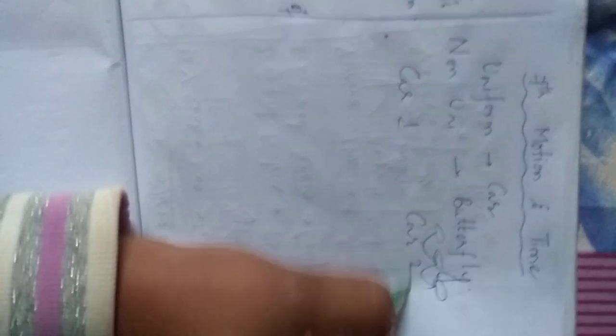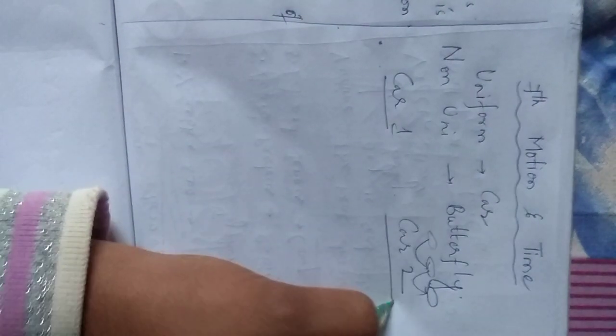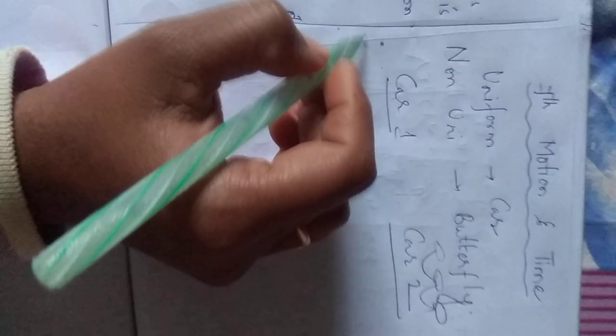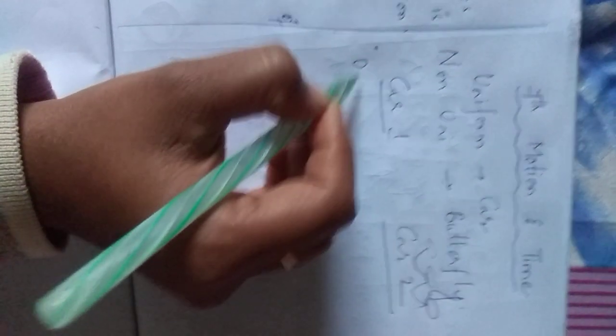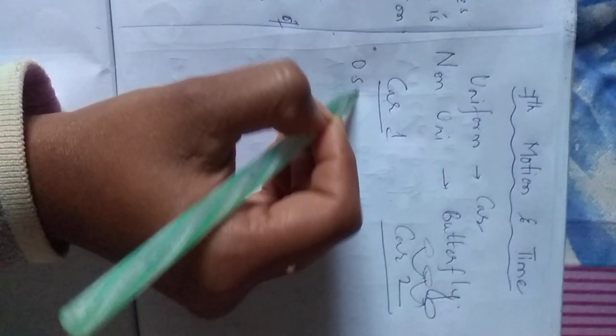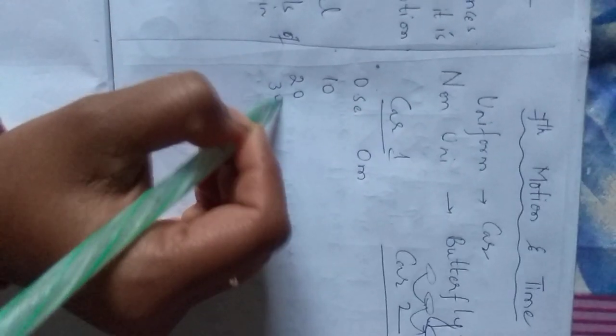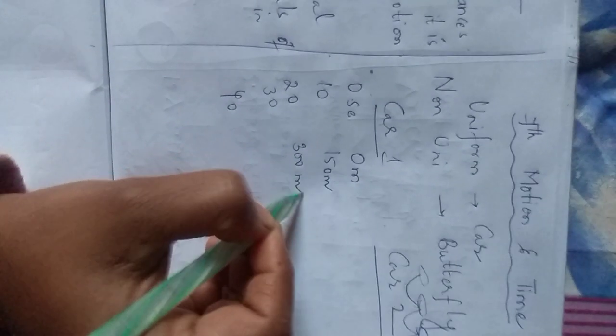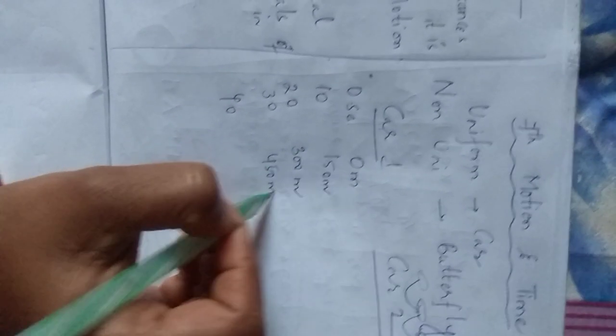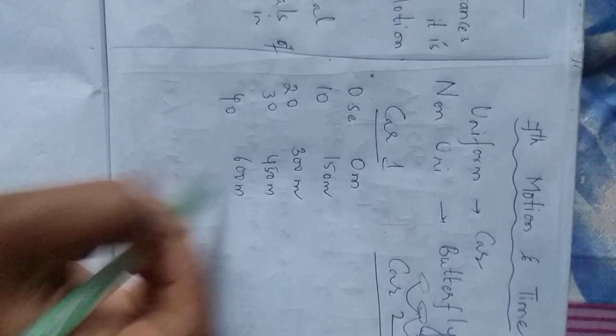Here car 1 and car 2, there are two cars. Car 1 is travelling: in 0 seconds it is 0 metres, then 10, 20, 30, 40 seconds at 150 metres, 300 metres, 450 metres, 600 metres.